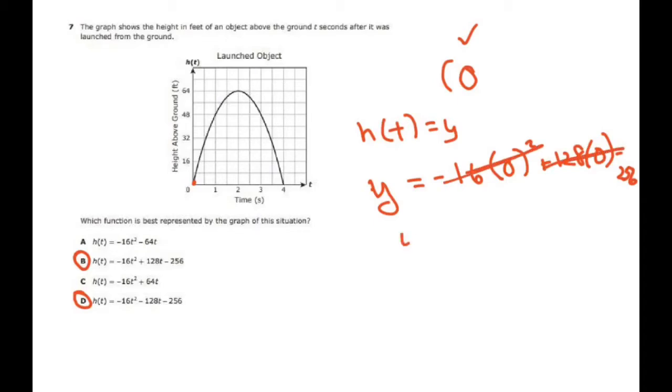This all zeroes out, that zeroes out, that zeroes out, so you're going to get y equals negative 256, and that would be your y-intercept. So when x is zero, y would be negative 256, which it's not, it's zero.